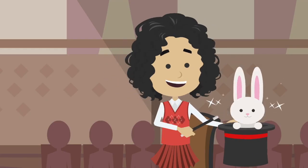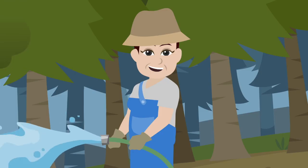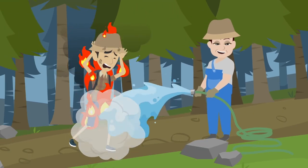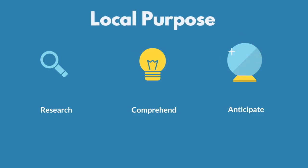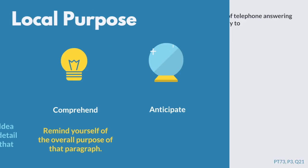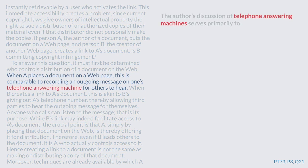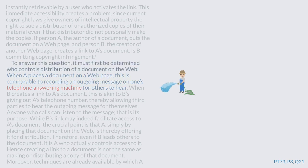The secret trick to local purpose is that when we look back at the text, we actually want to look at the sentence right before — a framing idea that comes right before it, or a takeaway that follows it. We'll often want to remind ourselves of the overall purpose of that paragraph, but we don't need to go beyond that. When we see 'answering machines' shows up in the second sentence, we want to resist the urge of caring about that sentence. We care about what came before or after.